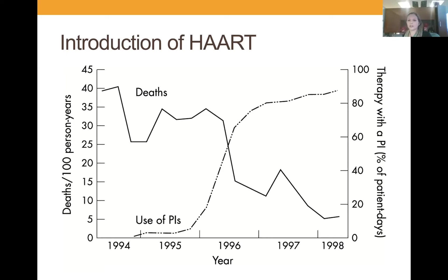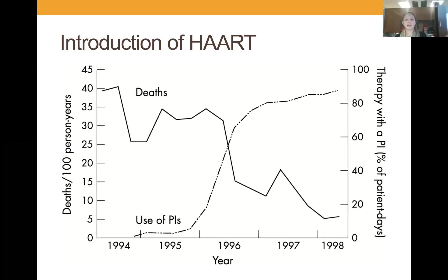We were using those nucleosides — monotherapy, dual therapy — and it wasn't working; people were still dying. If you see patients who survived that era, they'll often have a lot of resistance to those nucleosides. Some of those older patients have resistance not because they were non-compliant but because they were compliant to the wrong thing — the medical world didn't know better yet. In 1995 the first protease inhibitor was developed, and as we started pairing two nukes plus a protease inhibitor, PI use increased through the late 90s, and we saw for the first time in HIV history the rate of deaths decline.